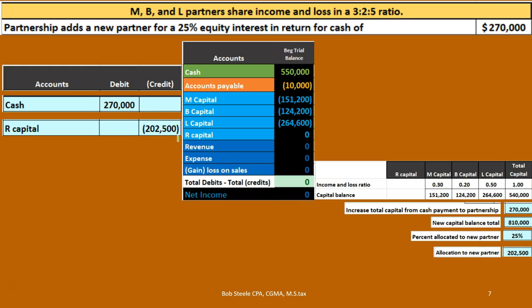So the new partner gave the partnership $270,000, but we're putting the new partner on the books at $202,500. You might ask: why would the new partner agree to these terms? If assets minus liabilities equals the value in the company and the new partner is only going to receive $202,500 of value, why would they give the partnership $270,000?